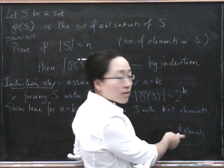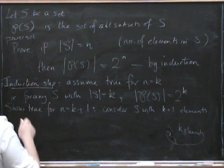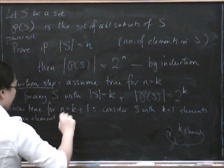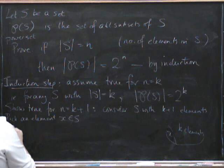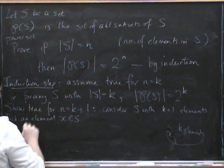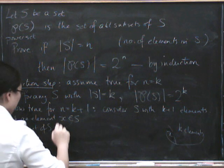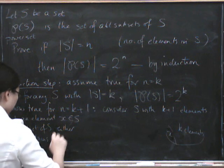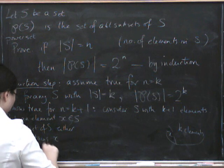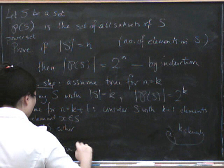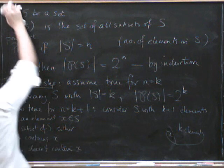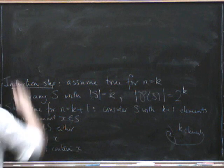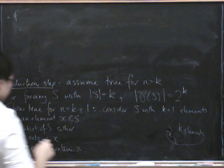So in either case, we have to use subsets of the part with only k elements. So we pick an element, X in S. So any subset, any subset of S either contains X or doesn't contain X. I feel like I want a bit more board at this point. So let's use this top part of the board.